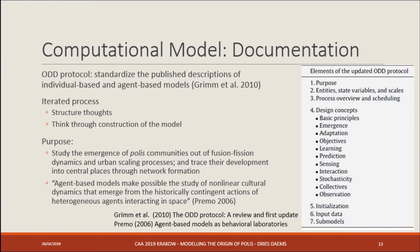An agent-based model does really well at allowing you to study the non-linear dynamics that emerge from historically contingent actions of agents interacting in space. In Bintliff's original model, the reasons why certain communities developed into polis whereas others did not was left very much to contingency. That's where an agent-based model allows you to make sense of that contingency in more detail — to look into the drivers behind a certain process and tease out how this process actually could have worked.